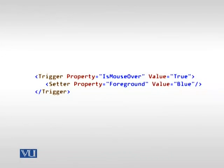ایک easier طریقہ یہ ہے کہ یہ کام XAML کے اندر کریں۔ یہاں پر ہم نے ایک trigger کا tag use کیا ہے - trigger ہم first time use کر رہے ہیں۔ Trigger کے tag میں ہم نے property IsMouseOver کی value true set کی ہے، اور setter کے ذریعے foreground کو blue set کر دیں۔ یہاں پر ہمیں اسے revert کرنے کی کوئی tension نہیں - یہ automatically revert کر جائے گا۔ Trigger یا active ہوتا ہے یا inactive - active ہوتا ہے تو setter کی value set ہوتی ہے، inactive ہوتا ہے تو dependency property کی entry remove ہو جاتی ہے، تو جو بھی fallback mechanism پر color آنا ہے وہ آ جائے گا۔